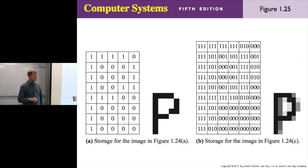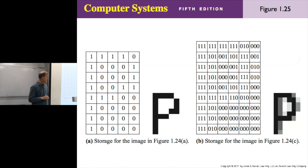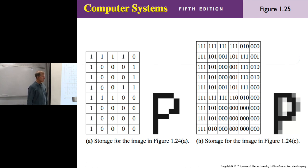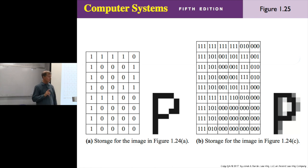You can store 8 pieces of information in 3 bits: 000, 001, 010, 011, 100, 101, 110, 111 — there are 8. So this gives 8 shades of gray. If you wanted more, with 4 bits you could store 16 shades of gray.